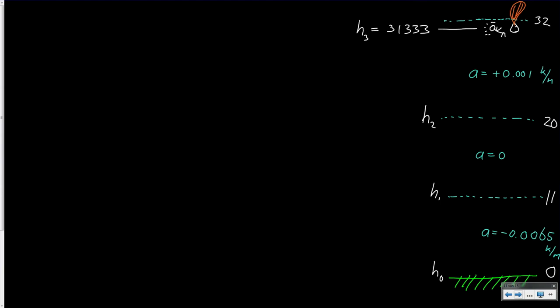In this clip we will actually use the standard atmosphere equations to calculate the pressure, density and temperature at the altitude at which Joe Kittinger jumped from the balloon.